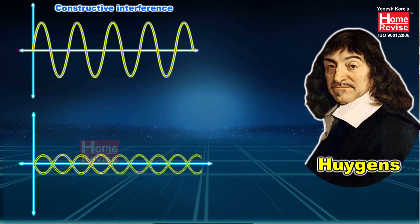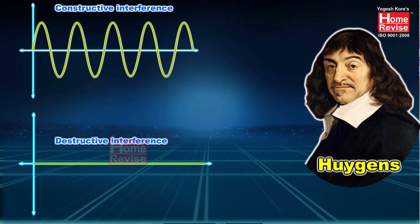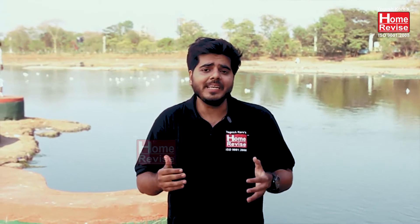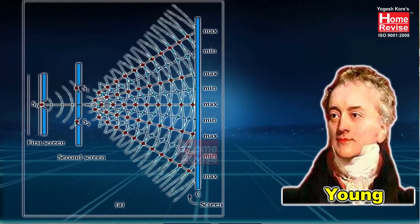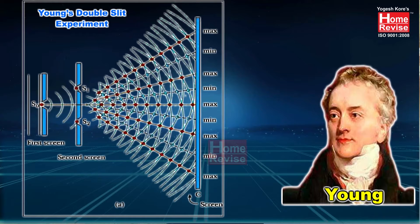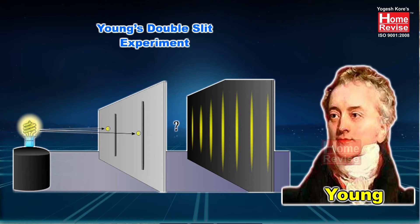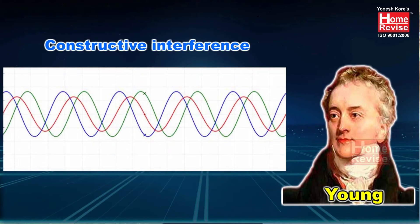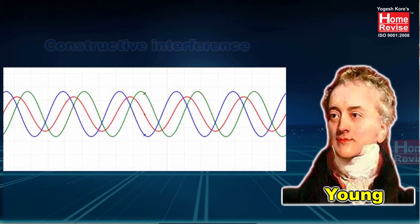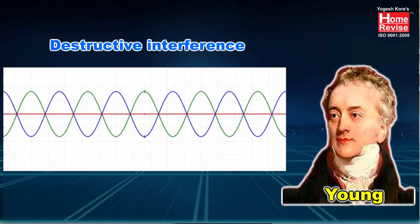A scientist named Young performed an experiment called Young's double slit experiment. In his experiment he explained how exactly constructive and destructive interference take place. He concluded that constructive interference results in a bright point and destructive interference results in a dark point.